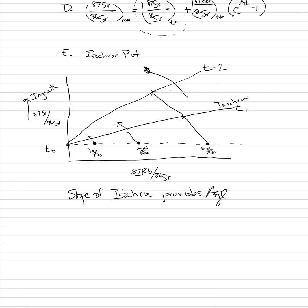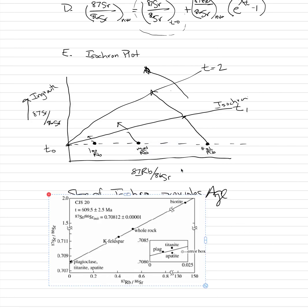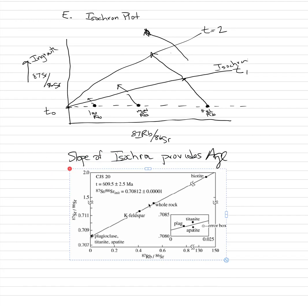Here's a real example from scientist Leon Long, working on a pluton from Brazil. We can see low-rubidium minerals, moderate-rubidium minerals, and high-rubidium minerals plotted. A slope is produced through these points, and the slope of that line gives the age of the rock. That concludes geochronology — if anything was unclear, consult the textbook or reach out by email.